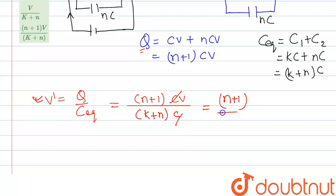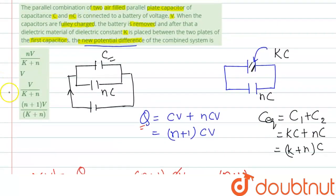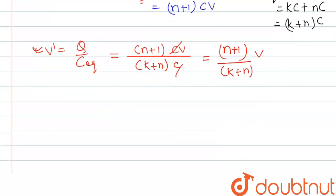So if we check the options, the correct answer is the fourth one, that is (n+1)V/(k+n). So we can write the correct answer: the correct answer is (n+1)/(k+n) times V.